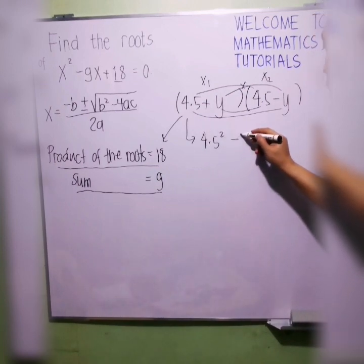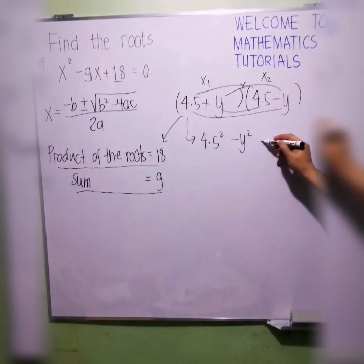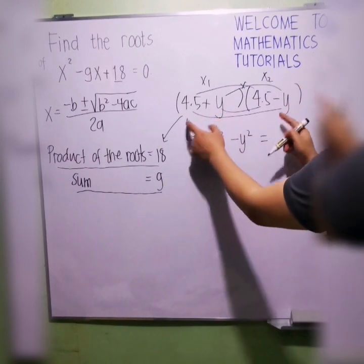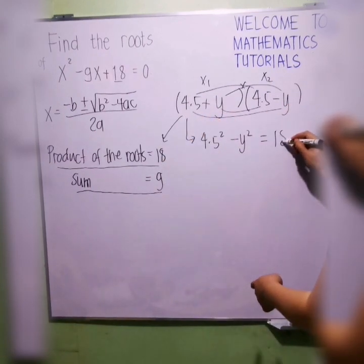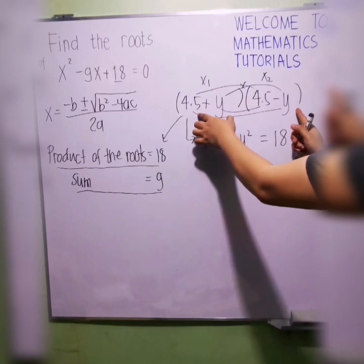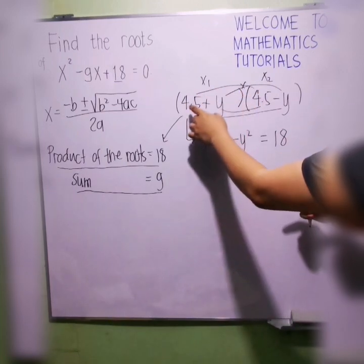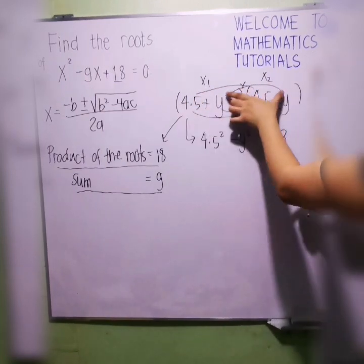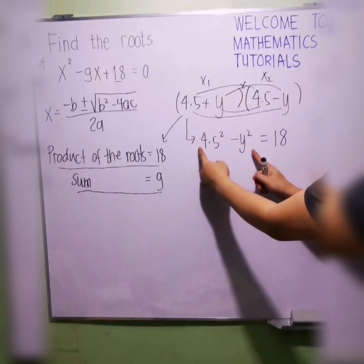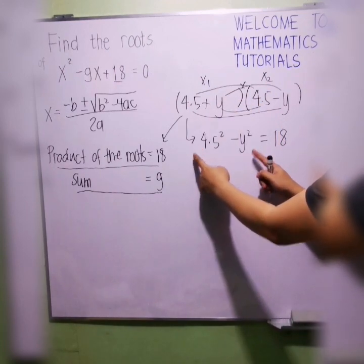This will become 4.5 squared minus Y squared. This should all be equal to when multiplied to 18. This is 18. But you can solve this using FOIL method. First term, outer term, inner term, last term. You will have the same answer of this one.